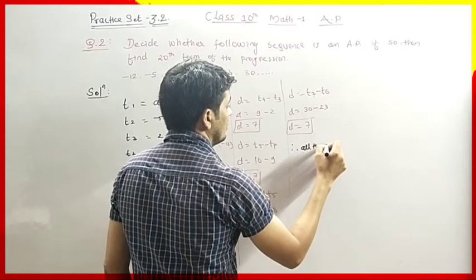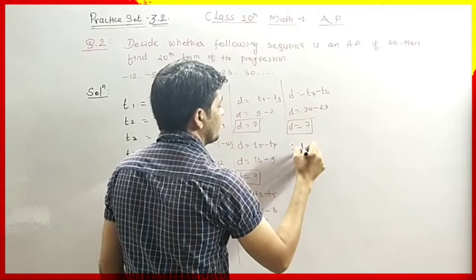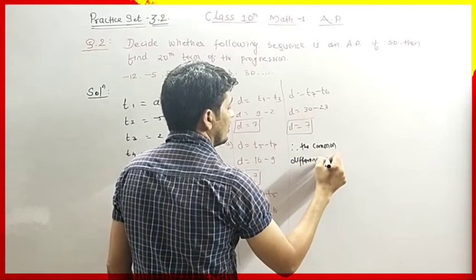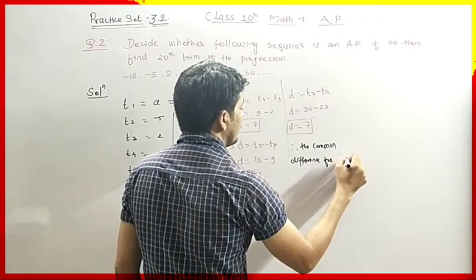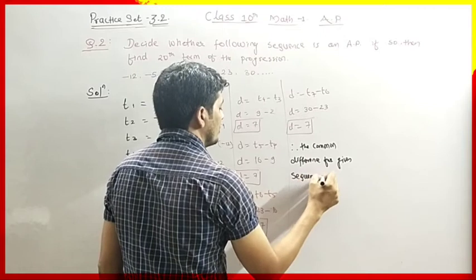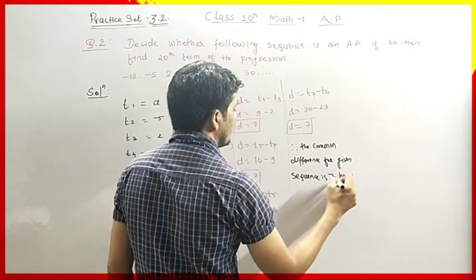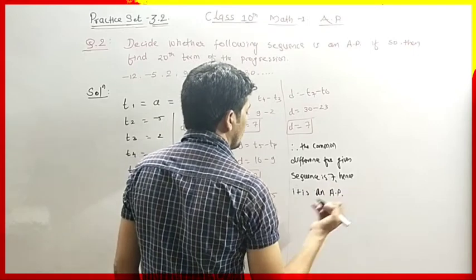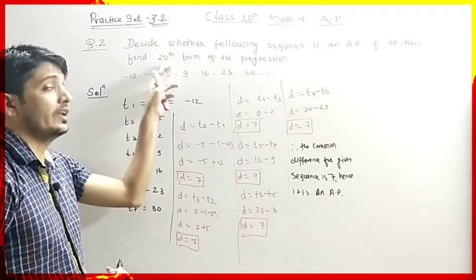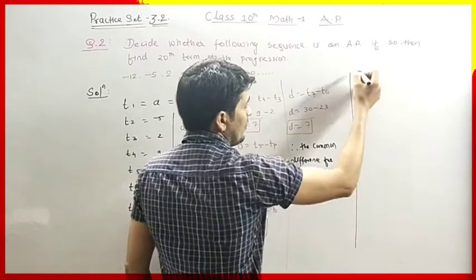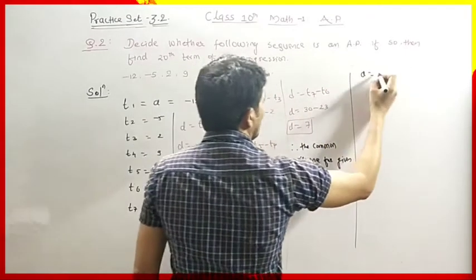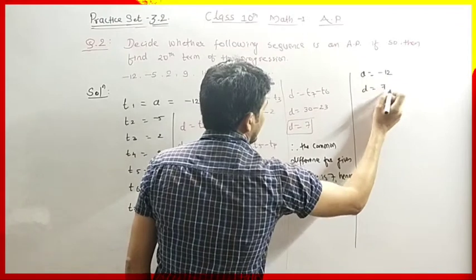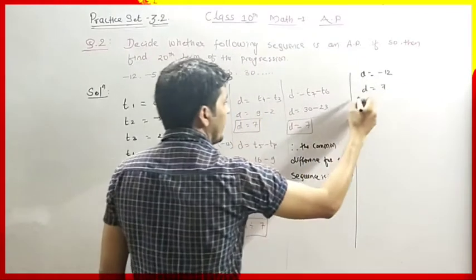Therefore, the common difference for the given sequence is 7. Hence, it is an Arithmetic Progression. Now we have to calculate the 20th term. We have A equals minus 12 and D equals 7. We need to find T20.